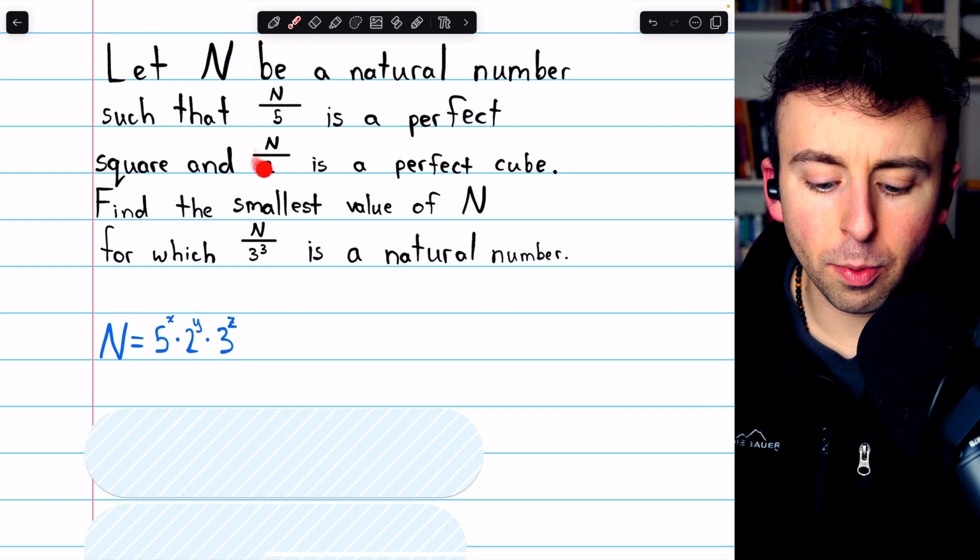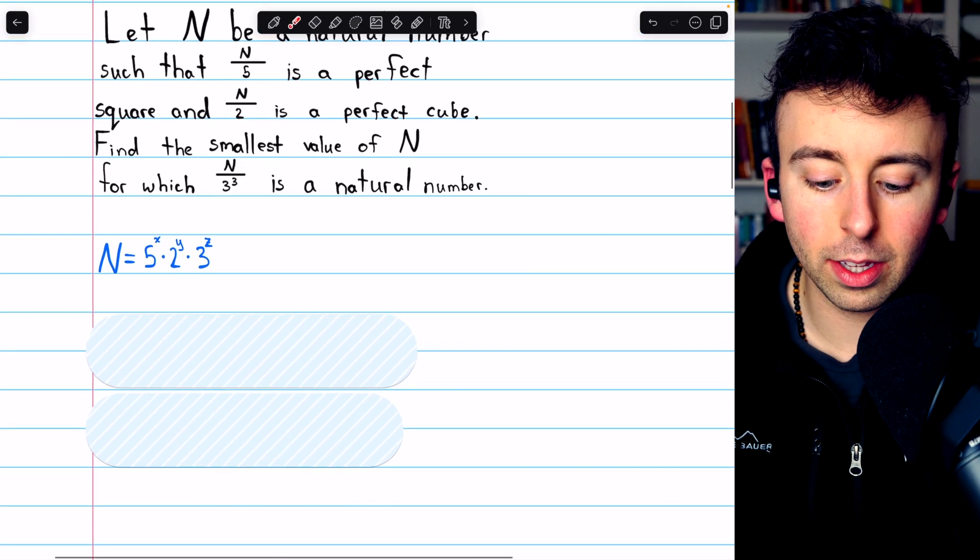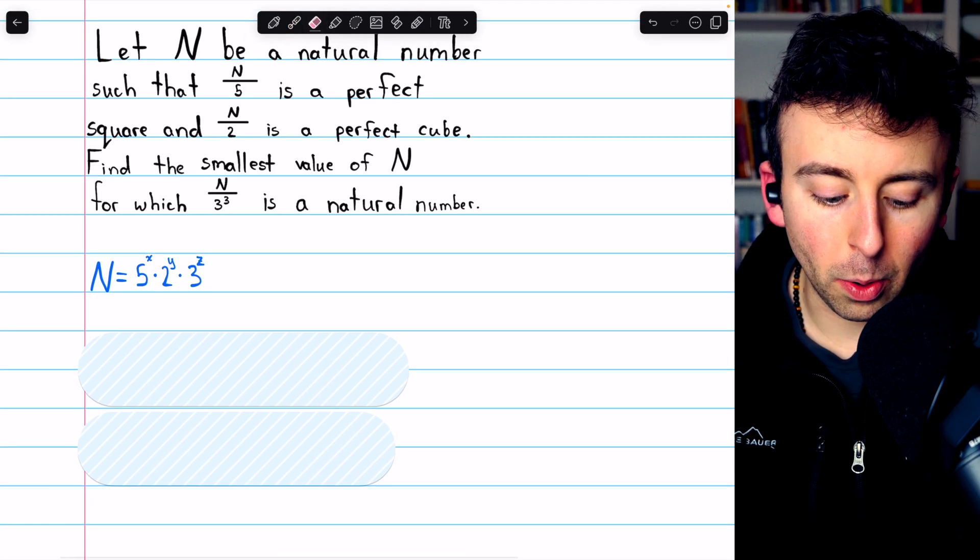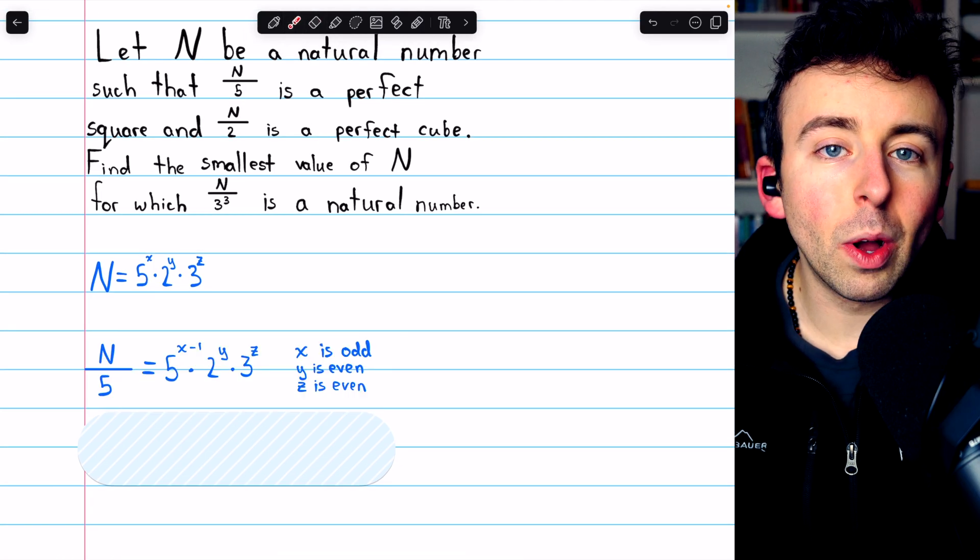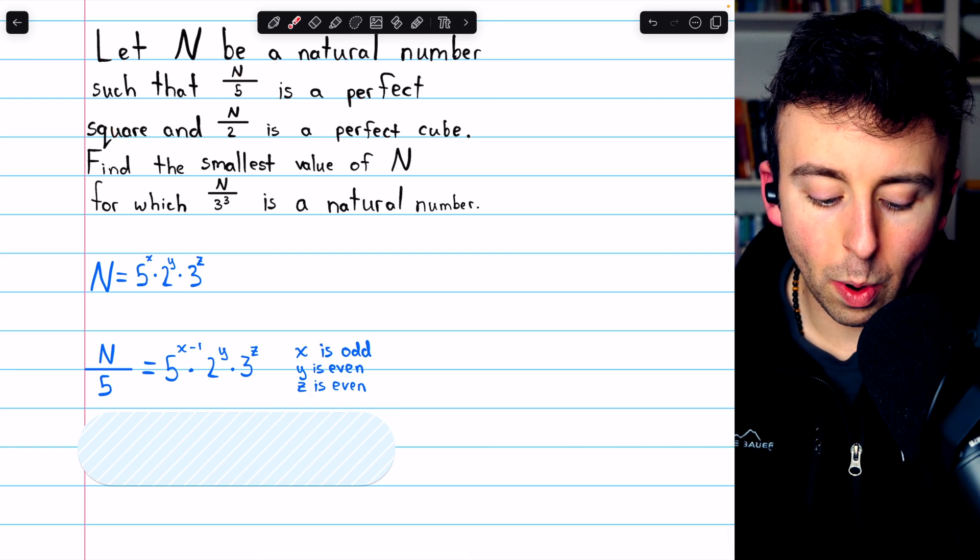Now, let's consider the conditions the problem gives us and see what restrictions that forces on our exponents. Remember, we're going to want these exponents to be as small as possible while still fitting the criteria. First, we know that N over 5 is a perfect square.